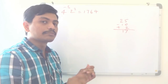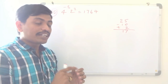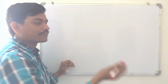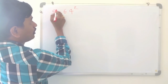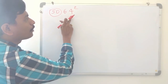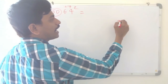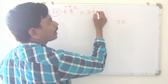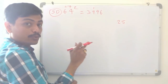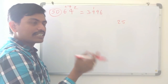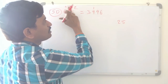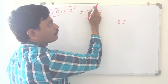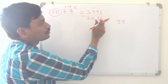Let us take a number between 60 to 70. To find squares from 60 to 70, we need to know the squares from 10 to 20. I'll take 64 squared. We take 50 as the base. 64 is how much bigger than 50? Plus 14. Always add to 25: 25 plus 14 is 39. And 14 squared is 196. Since we need only 2 digits, we carry the 1 from 196 and add it: 39 plus 1 is 40, giving us 4096. So 64 squared is 4096.